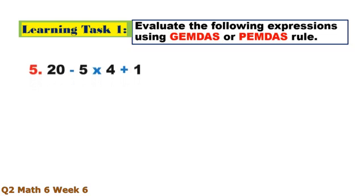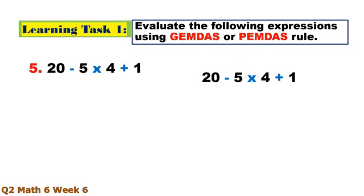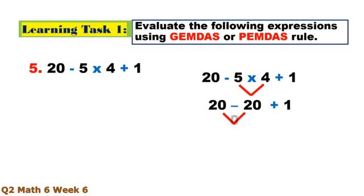Number 5. Multiplication first: 5 times 4 equals 20. Then subtraction: 20 minus 20 equals 0. Plus 1 equals 1.